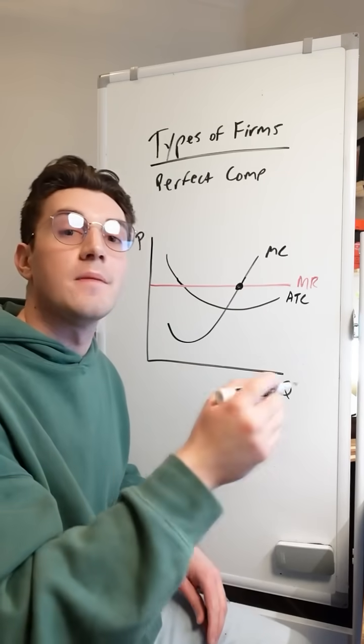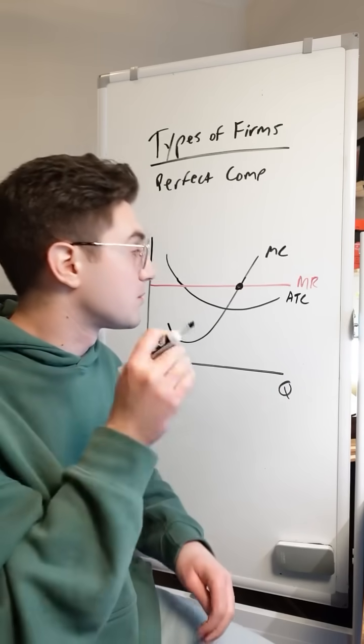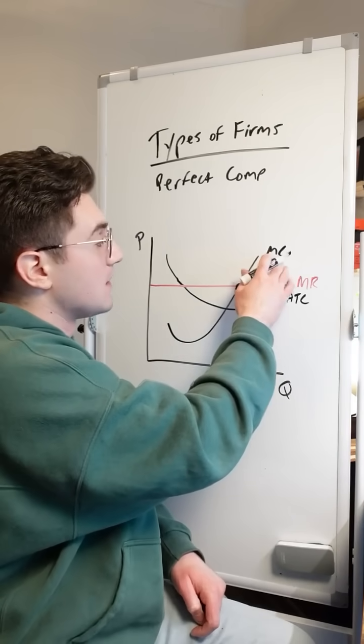So that's why this point profit maximizes for any firm. Perfect competition and monopoly and all types of firms profit maximize at this point where MC equals MR.